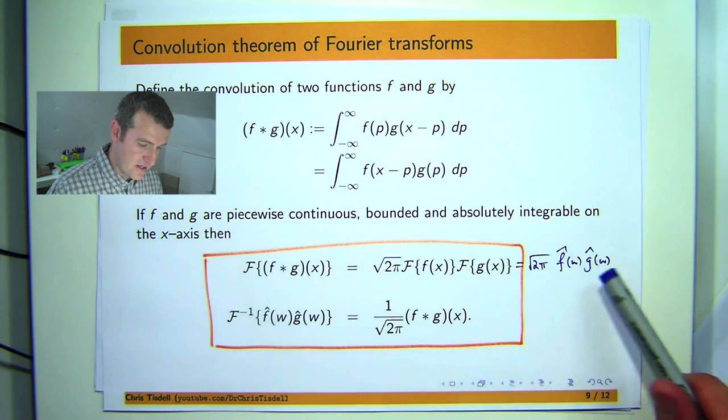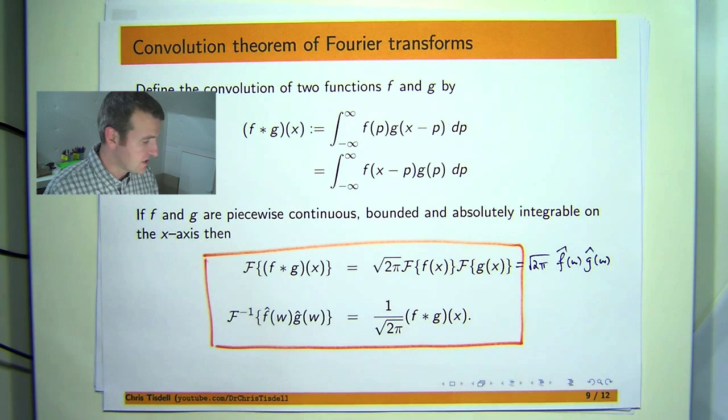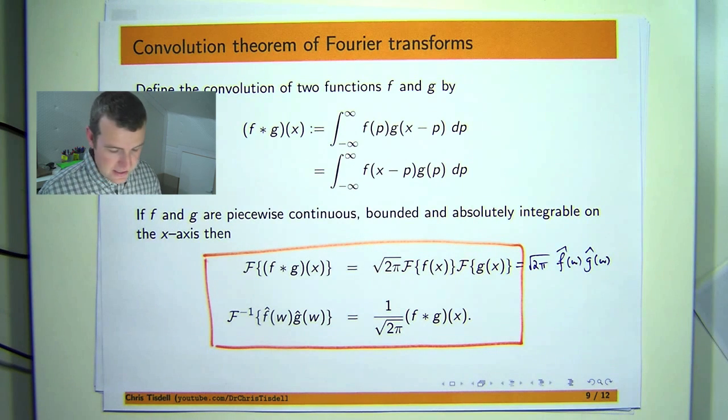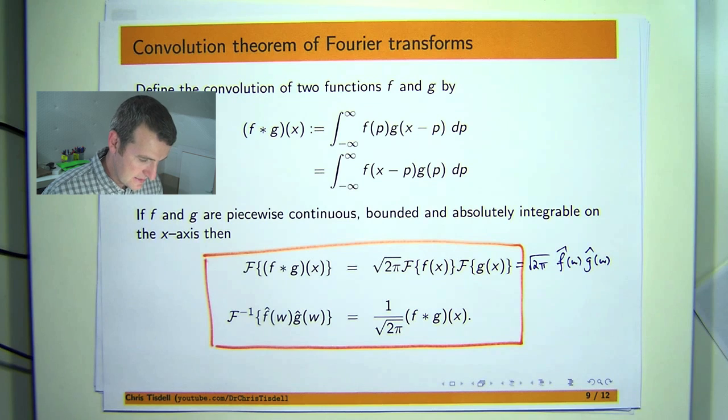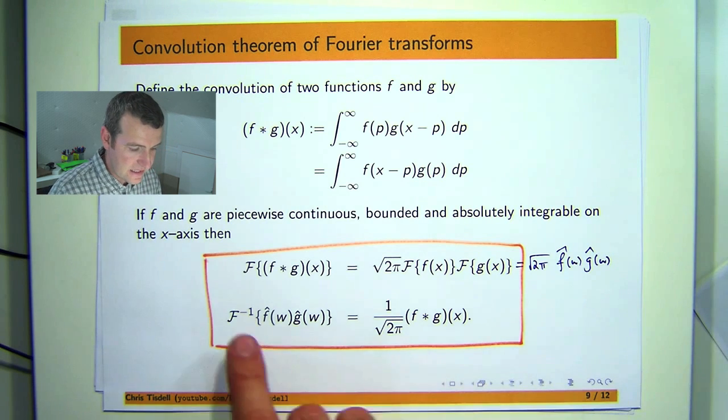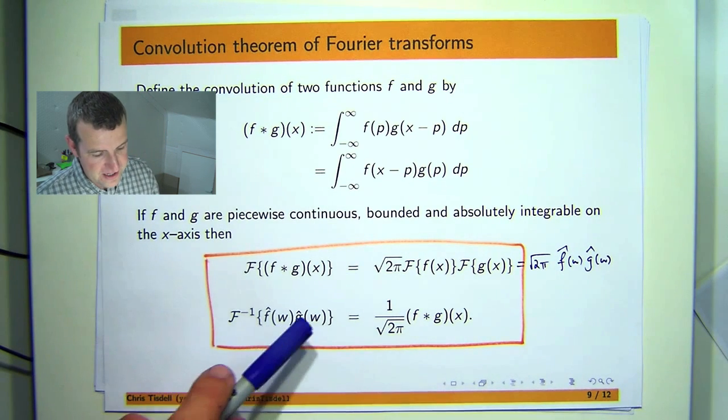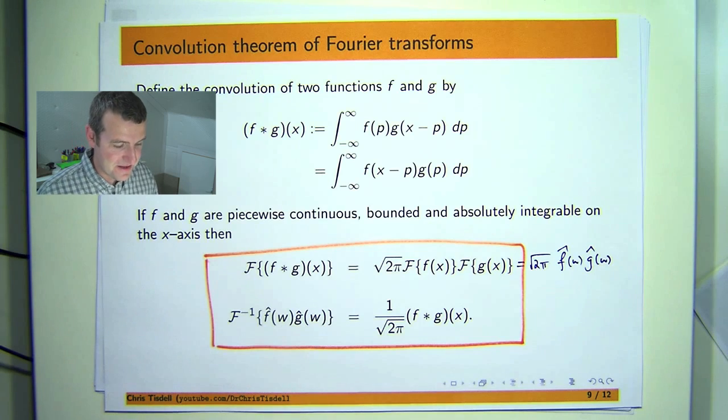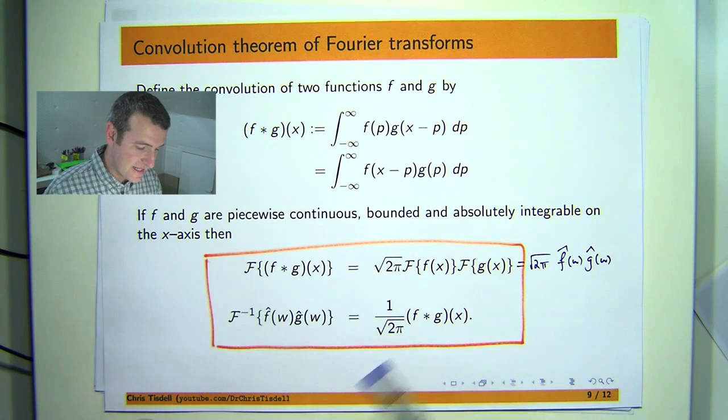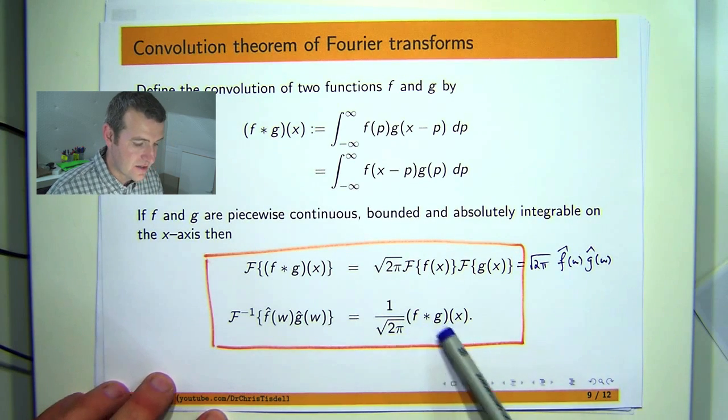So we use the f-hat notation, sometimes we use the curly f notation. And if you want to take the inverse transform of the product of two transforms, f-hat and g-hat, then that is just this constant times the convolution.